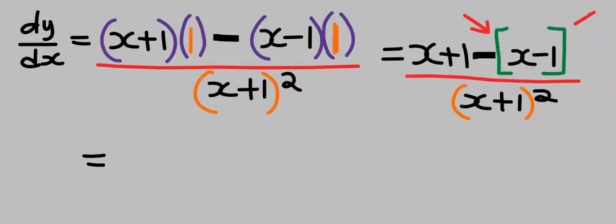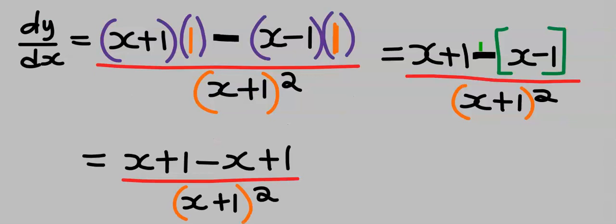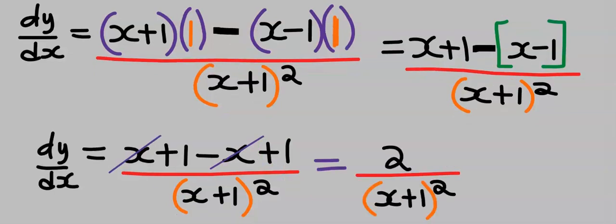Next, you open up the brackets: minus times X we're going to get minus X, we're going to get plus 1. Next, plus X we take away minus X, and our answer is 2 divided by (X plus 1) squared.